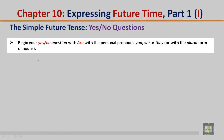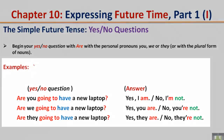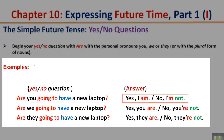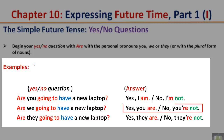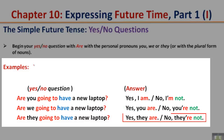Begin your yes or no questions with Are, with the personal pronouns you, we, or they, or with the plural form of nouns. Examples: Are you going to have a new laptop? Yes, I am. No, I'm not. Are we going to have a new laptop? Yes, you are. No, you're not. Are they going to have a new laptop? Yes, they are. No, they're not.